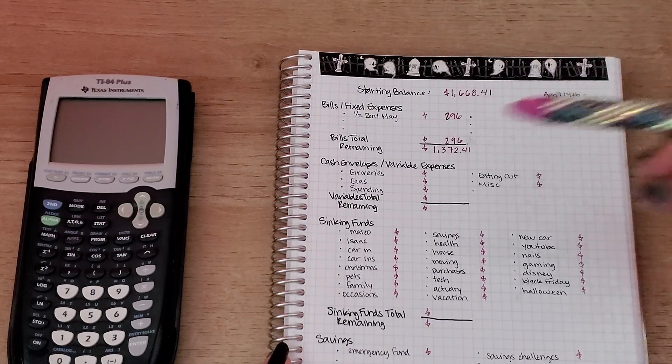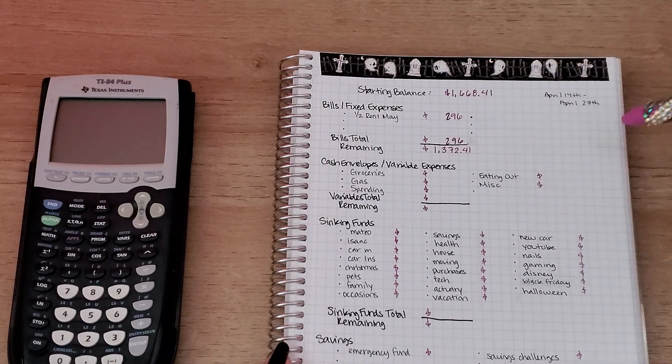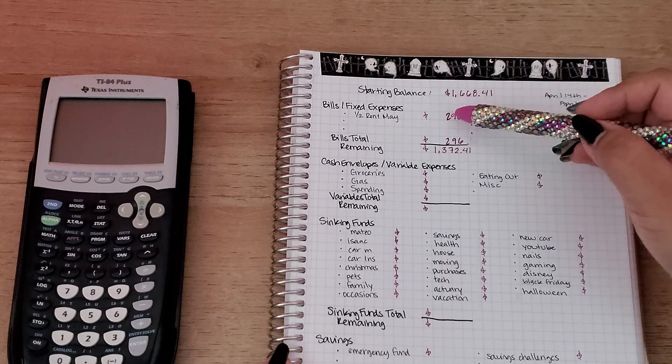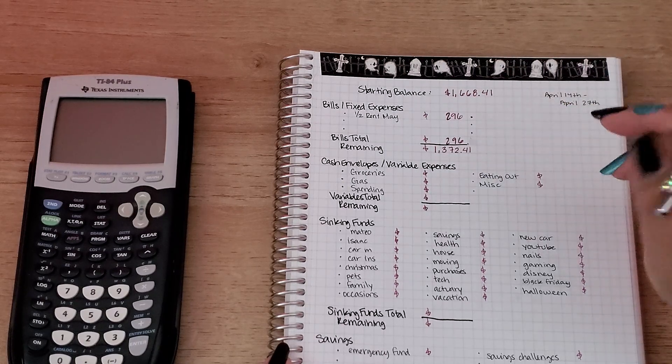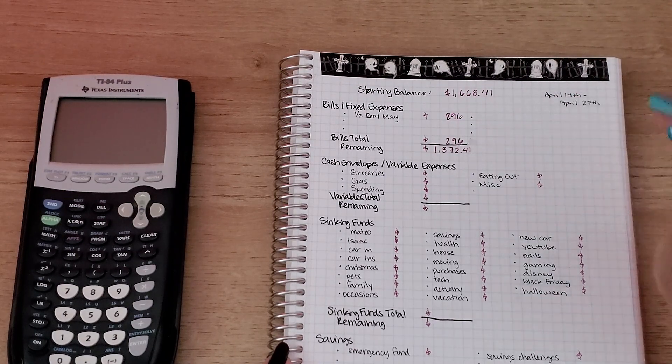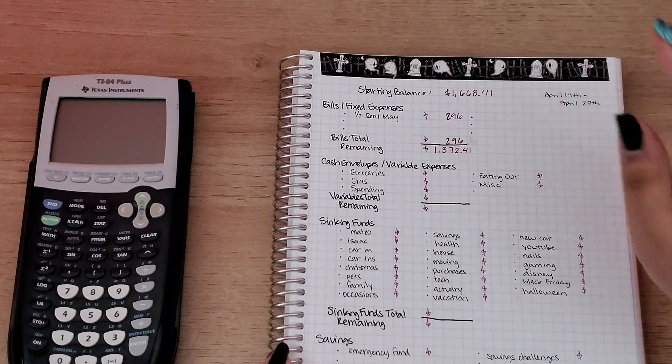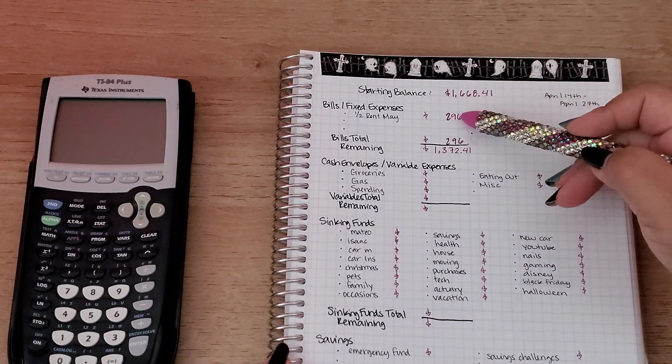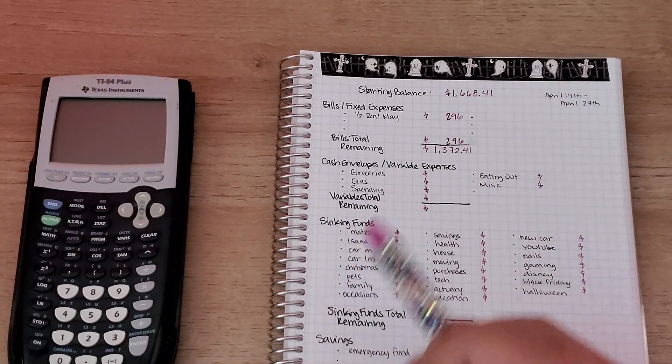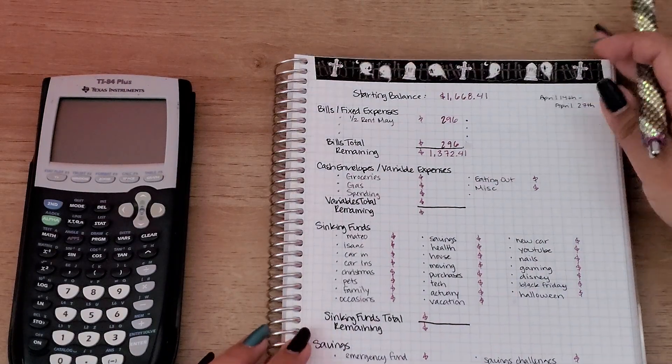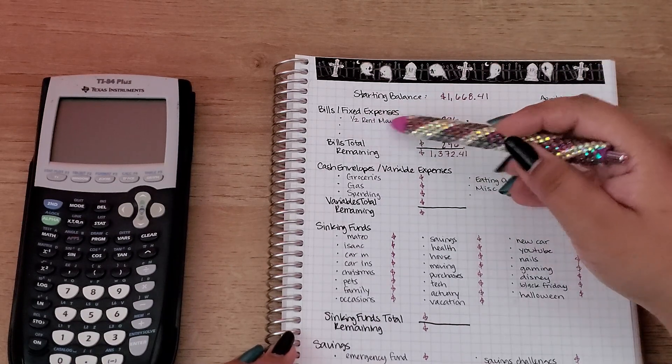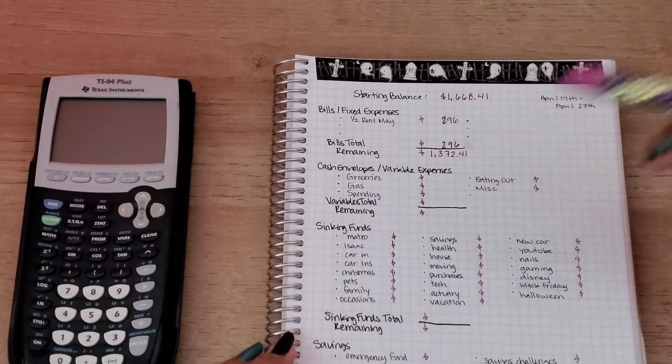Next up is my bills for fixed expenses. This is half of my rent. My rent is $591, it fluctuates a little bit. I share my expenses with four other people, so that's why my rent is so low. This is half of my rent for me, which is $296. Next paycheck I'm going to take another half to fully fund my rent for May.